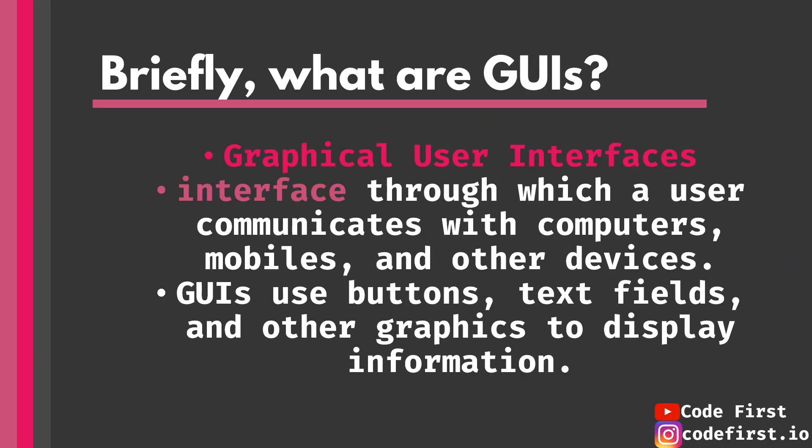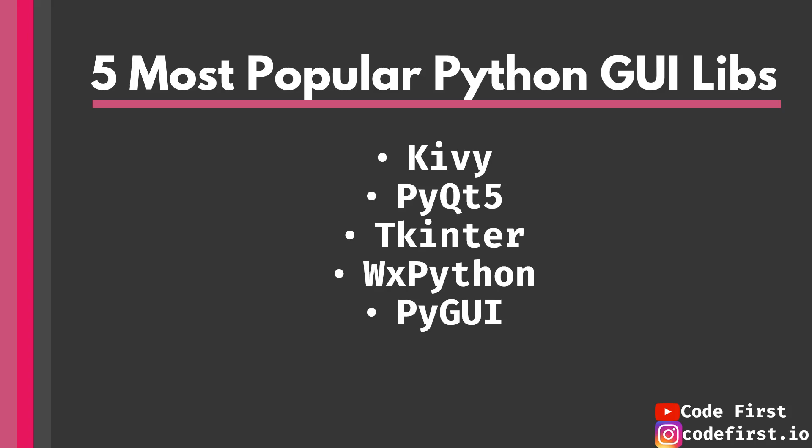First, let's briefly go over what GUIs are. GUI stands for graphical user interface — it's an interface through which we communicate with the program we wrote. Instead of using the command line, we have an interface with buttons, text fields, sliders, scroll bars, labels, and all sorts of things that communicate information and ask for user interaction via mouse or touchscreen.